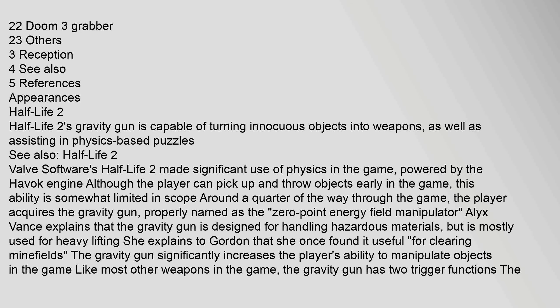Half-Life 2's gravity gun is capable of turning innocuous objects into weapons, as well as assisting in physics-based puzzles. Valve Software's Half-Life 2 made significant use of physics in the game, powered by the Havok engine. Although the player can pick up and throw objects early in the game, this ability is somewhat limited in scope. Around a quarter of the way through the game, the player acquires the gravity gun, properly named the Zero Point Energy Field Manipulator. Alex Vance explains that the gravity gun is designed for handling hazardous materials, but is mostly used for heavy lifting, and that she once found it useful for clearing minefields.